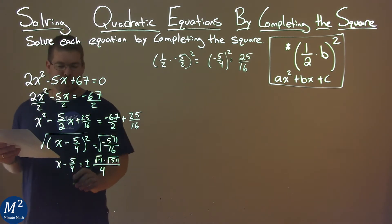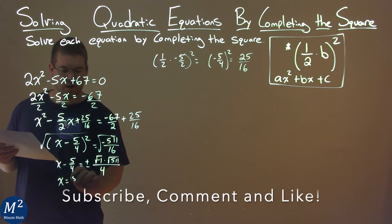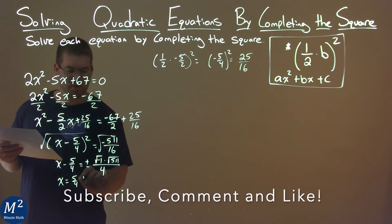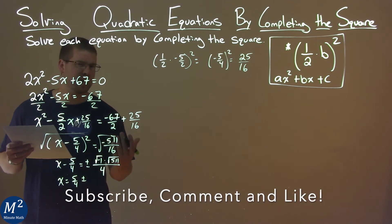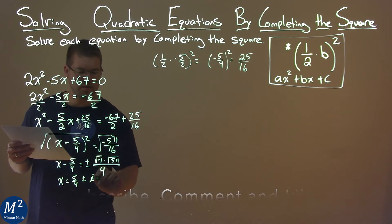We can add 5 fourths to both sides, so we have x equals positive 5 fourths plus or minus. Now the square root of negative 1 is i, times the square root of 511 over 4.